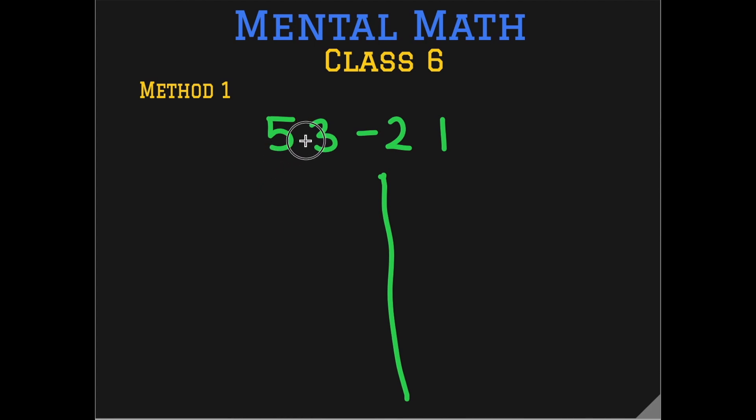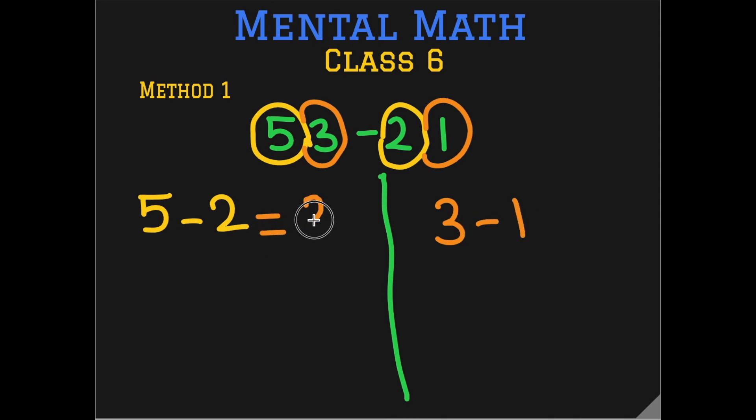So what are the tens in 53? 5 and what are the tens in 21? It's 2. So 5 minus 2 is the first part and then the ones are 3 and 1. So 3 minus 1. So 5 minus 2 is 3 and 3 minus 1 is 2. Single digit subtraction at work in our brain. And the answer is 32.